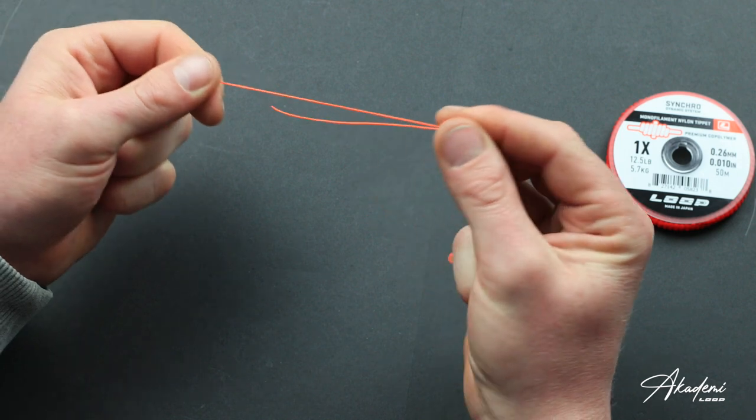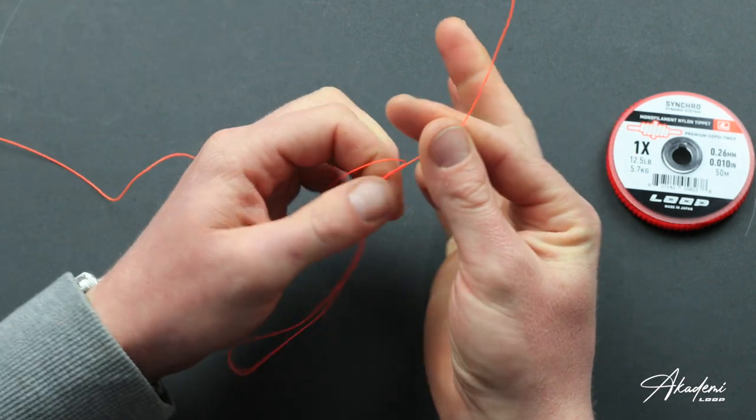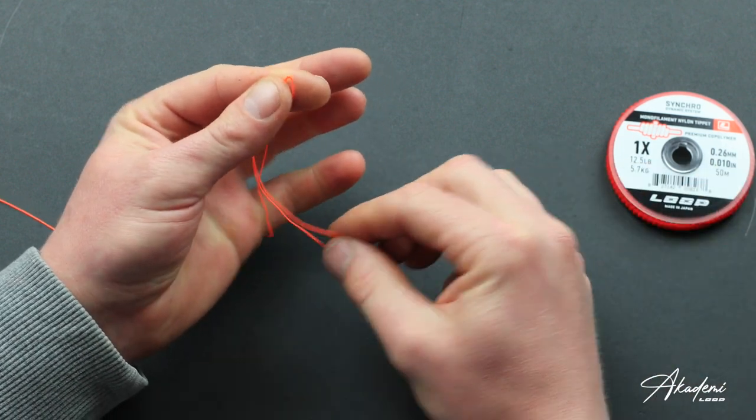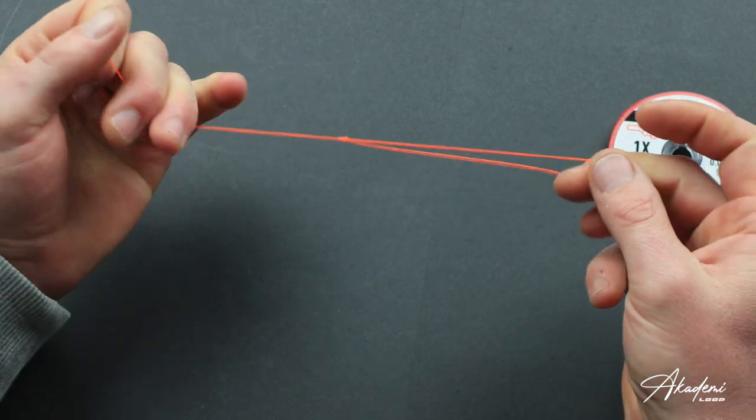Really quick easy loop knot for tying your leader to the fly line. Snip off the tag and we're good to go.